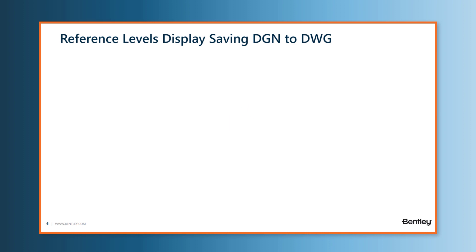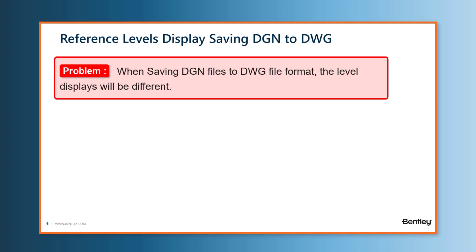Let's move to reference levels displayed when saving from DGN to DWG, and specifically we're going to be talking about when the levels of the reference file are the same as they are in the master file. Now there could be a problem with saving DGN files to DWG file format where the level display might be different.